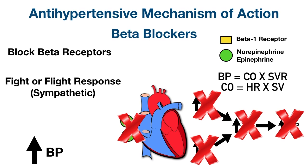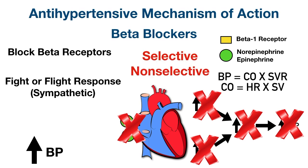Similar to alpha blockers, there are selective and non-selective forms of beta blockers depending on whether they bind to one or more types of beta receptors. This will be discussed more in the beta antagonist video. For more information about the different types of beta receptors, where they're located, and what their effects are, see the beta receptor EZMed video linked below.